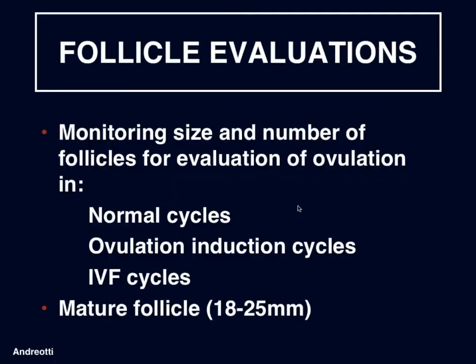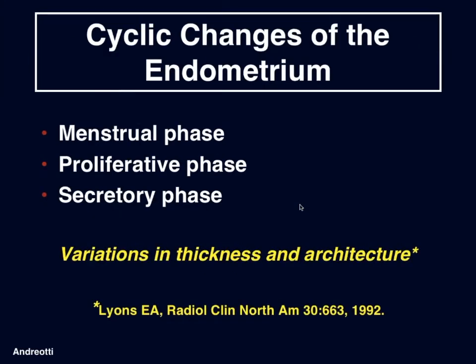We can also perform follicle evaluations in which we monitor the size and number of follicles to evaluate for ovulation in patients with normal cycles, with ovulation induction cycles, or with IVF cycles, to determine if there is a mature follicle available for ovulation. Let's move on now to cyclic changes of the endometrium, including the menstrual phase, the proliferative phase, and the secretory phase. There are variations in thickness and architecture throughout these phases that have been well described in the literature.